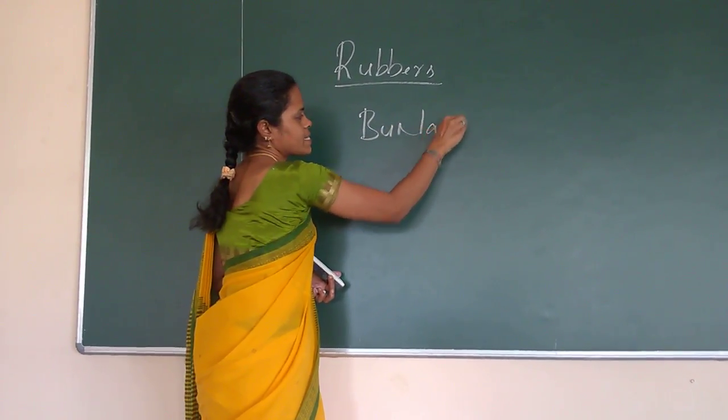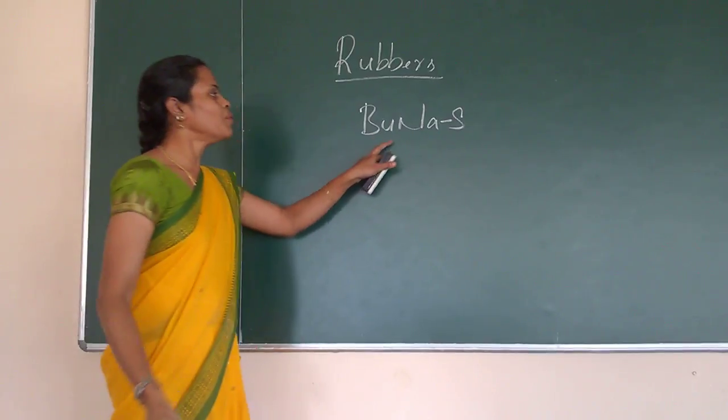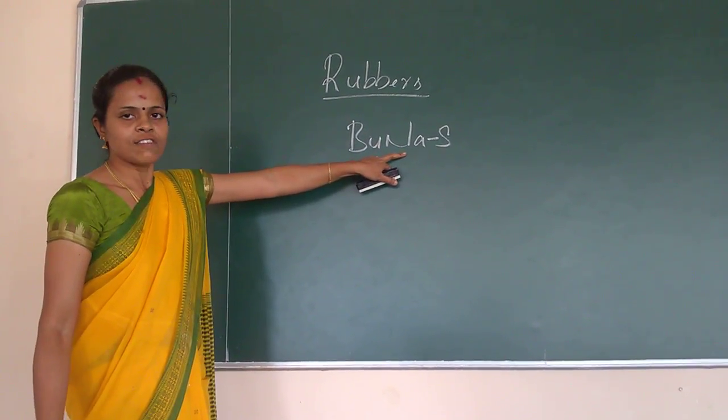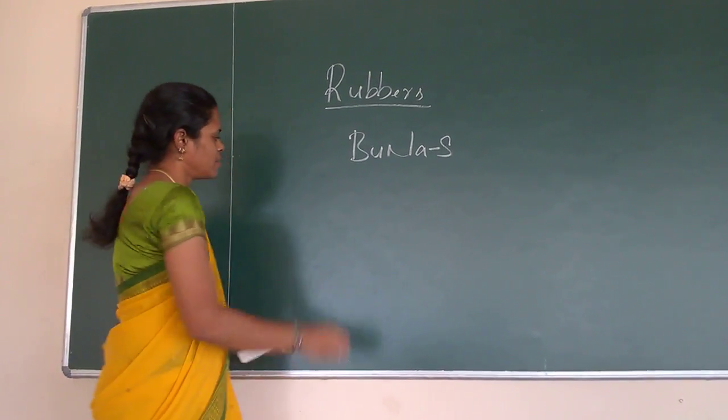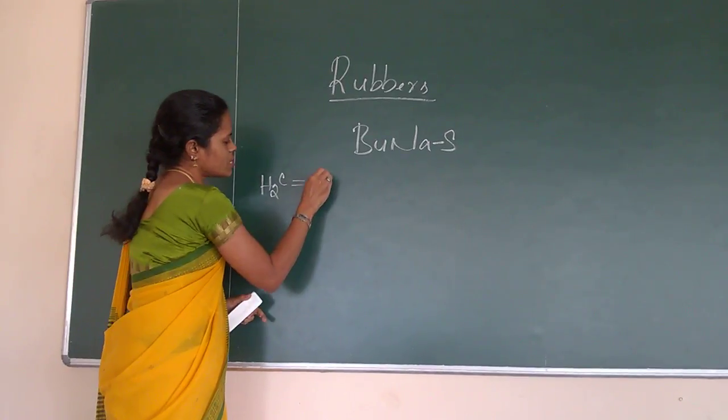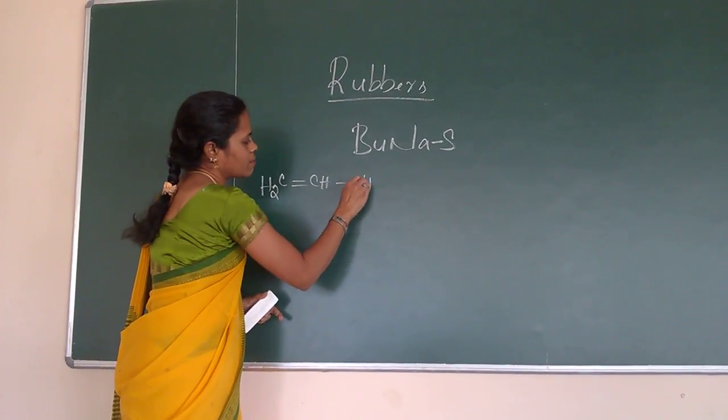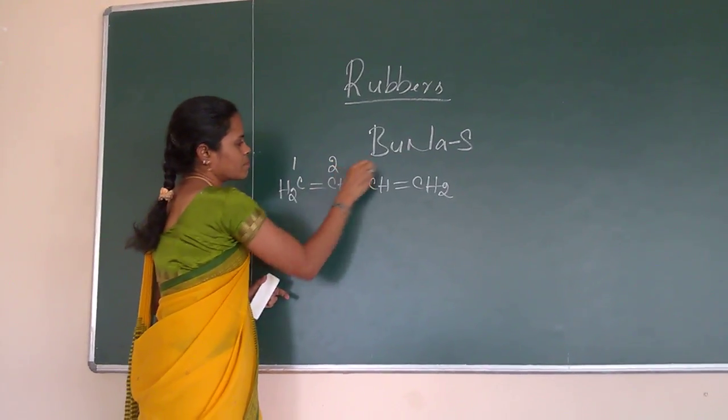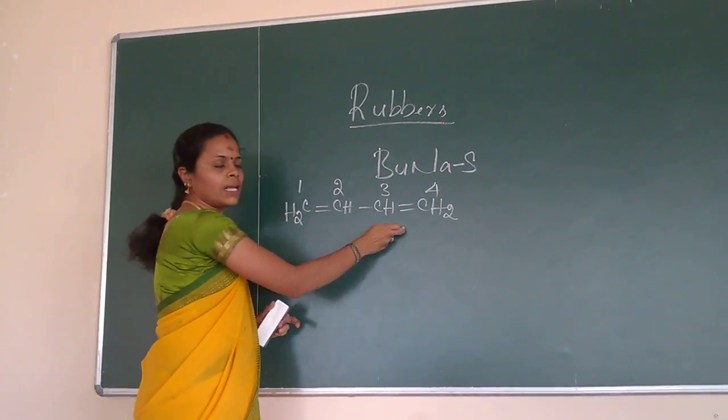Buna-S. Bu means butadiene. Na means sodium. S means styrene. So as we discussed earlier, this is the structure of butadiene. That is 1,3 butadiene.